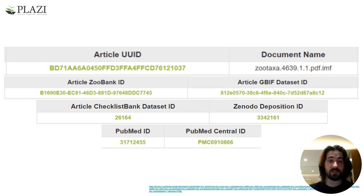Once the checking process is completed, the data transits to its linked destinations, confirming new IDs or linking previously existing ones. In the current slide, we can see links within PLASI for ZooBank, GBIF, Checklist Bank, Zenodo, PubMed and KIMS, and PubMed Central.